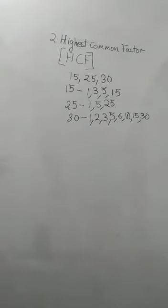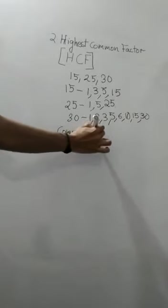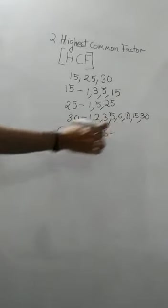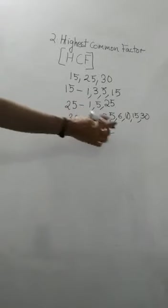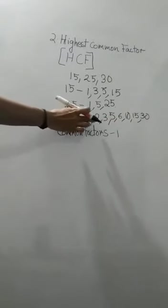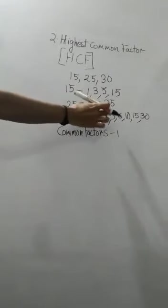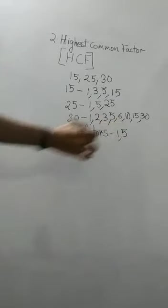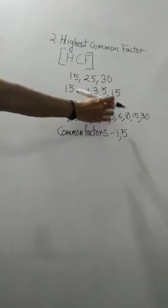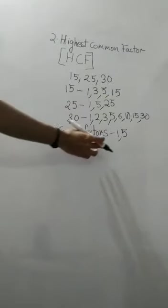Now let us see which are the common factors. Remember, 1 is a factor of every number, so the first common factor is 1. Next, 2 — 2 is not common in all three. Then 3 — 3 is not common in all three. Then 5 — yes, 5 is common. 5 is a factor of 15, 5 is a factor of 25, and 5 is a factor of 30. After that, 15 is in 15 and 30 but not in 25. So the common factors are 1 and 5.